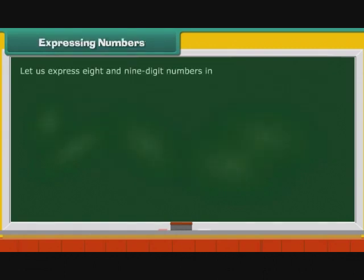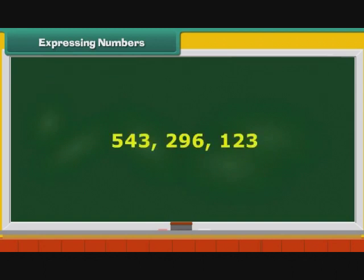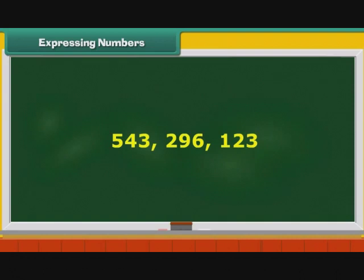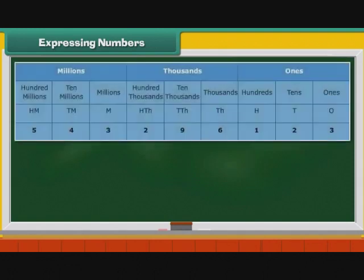To understand eight and nine digit numbers better, let us express them in expanded form and standard form. Look at this number: 543296123. It has three groups. Therefore, it belongs to the international system of numeration. Let us express it in expanded form. First, we arrange the number in the international place value chart: 543,296,123.